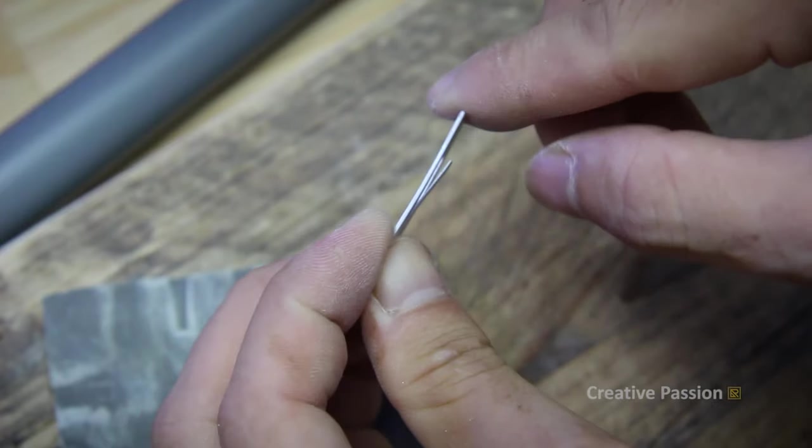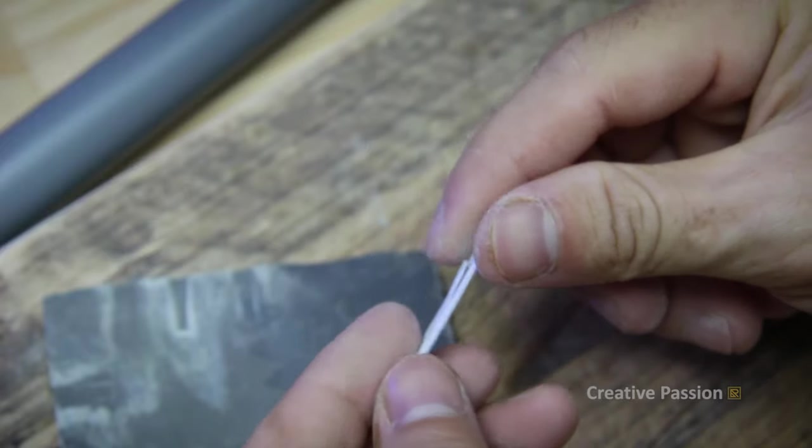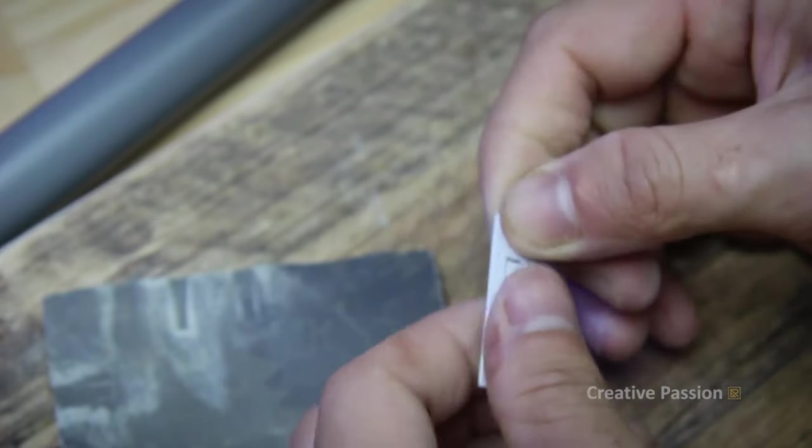Note that our reed blade must not touch the edge of the reed. We will sand until the plastic reed produces the sound of the note Si, then stop and test the sound on the instrument.